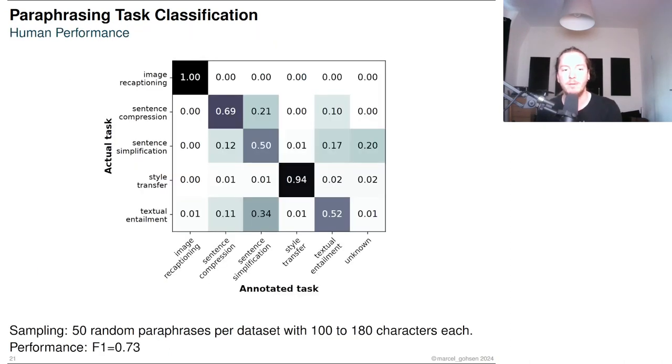We sampled 50 random paraphrases per dataset having 100 to 180 characters. The correct tasks could be assigned with an F1 of 0.73. Examples from the image recaptioning and style transfer tasks could be labeled correctly with an accuracy of 1 and 0.94 respectively. Examples from sentence compression and sentence simplification were confused for one another more frequently than any other combination of tasks. This is because a simplified sentence is also often shorter and vice versa.